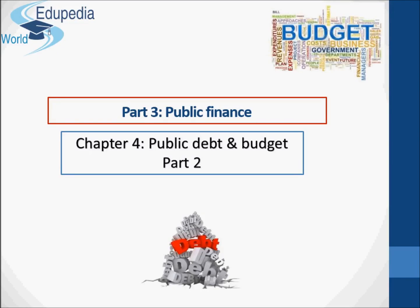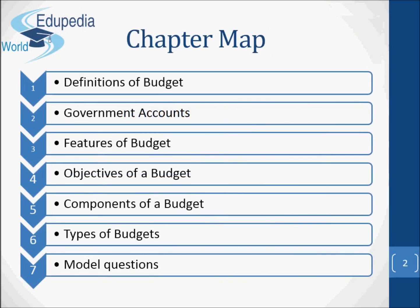Hello everyone and thanks for watching Edupedia World Videos. This chapter is entitled 'Public Debt and Budget, Part 2.' In this chapter we are going to talk about budgets — we are going to define budgets, then government accounts, after that we are going to find out the features of budgets, their objectives, their components, and types of budgets.